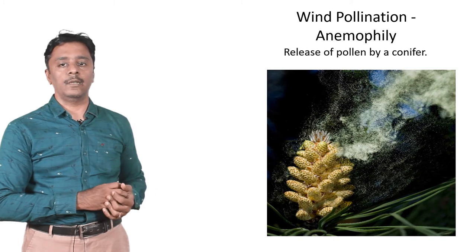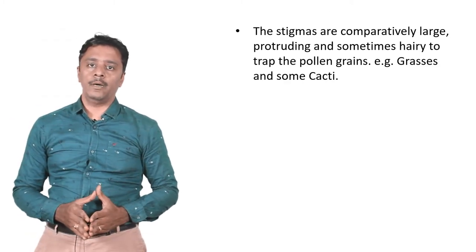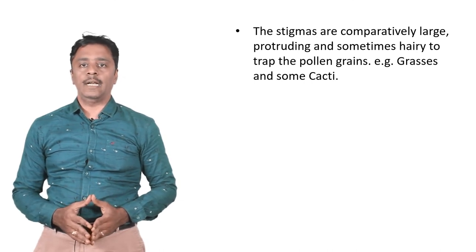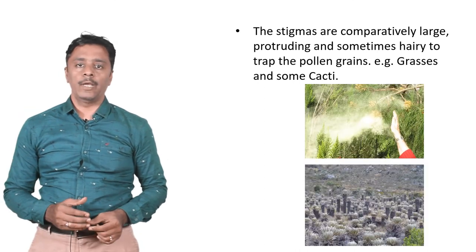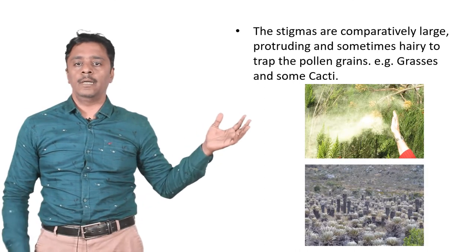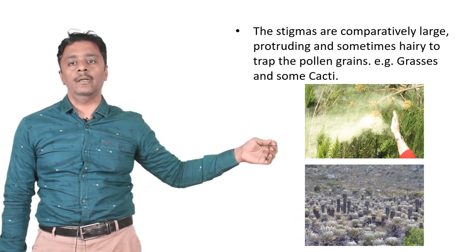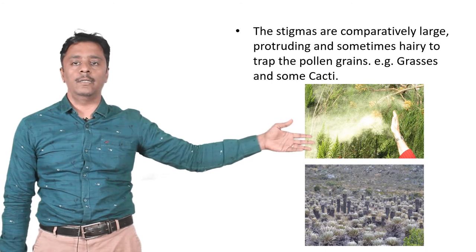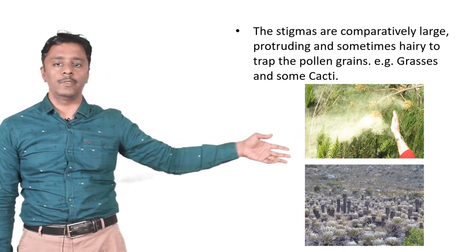This picture shows the release of pollen by a conifer. You can see small pollen spreading through the air to a longer distance. The stigmas of anemophilous plants are comparatively large, protruding and sometimes hairy to trap the pollen grains. Examples: grasses and some cacti. You can see how the pollen grains spread in the air from the cacti.